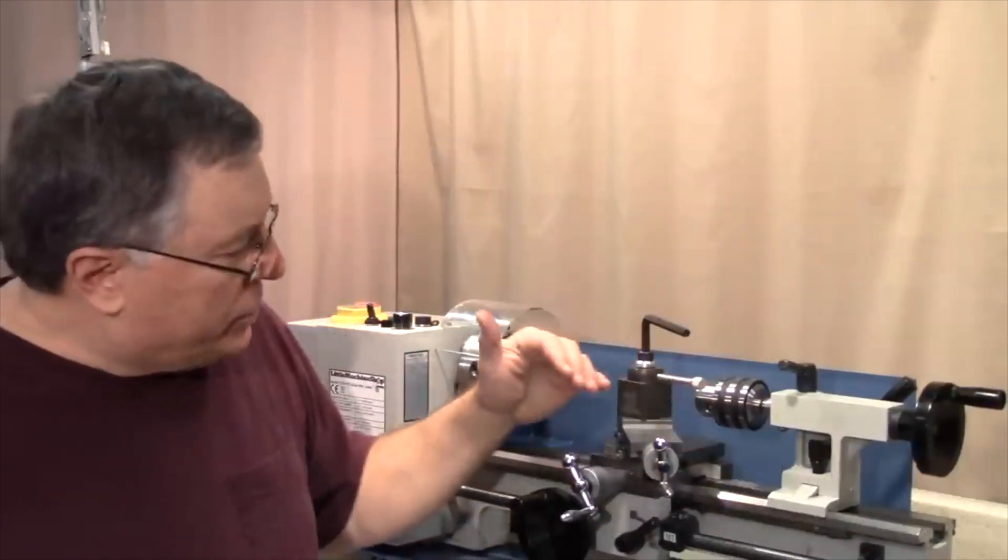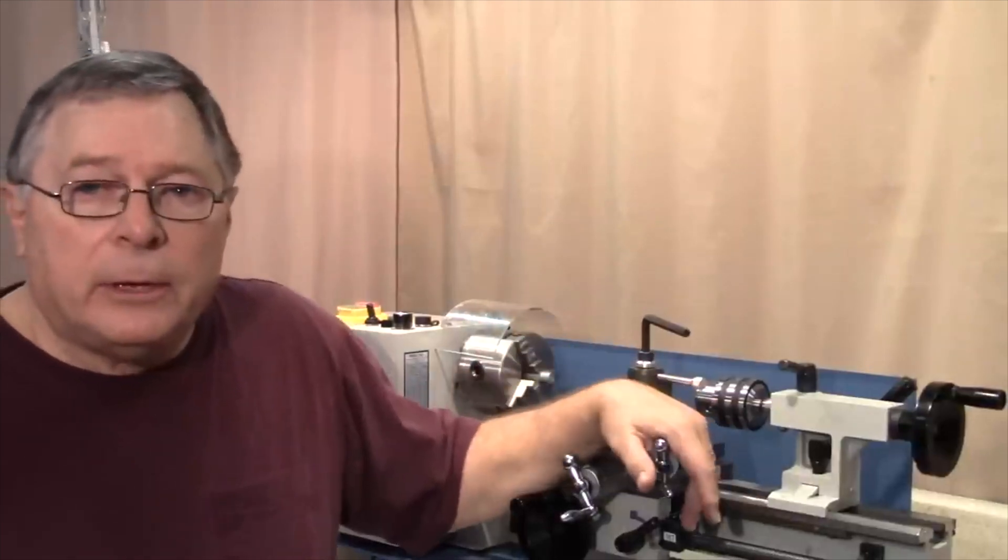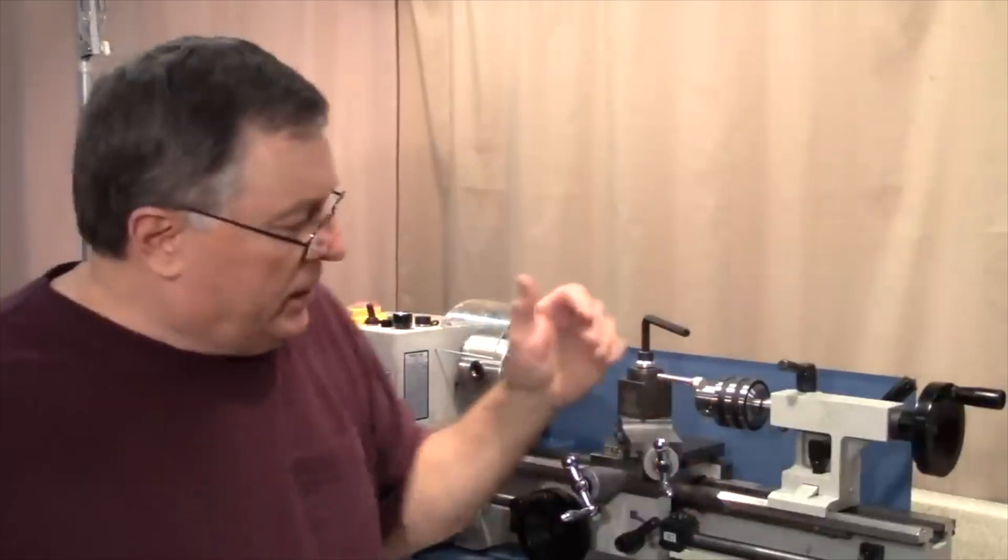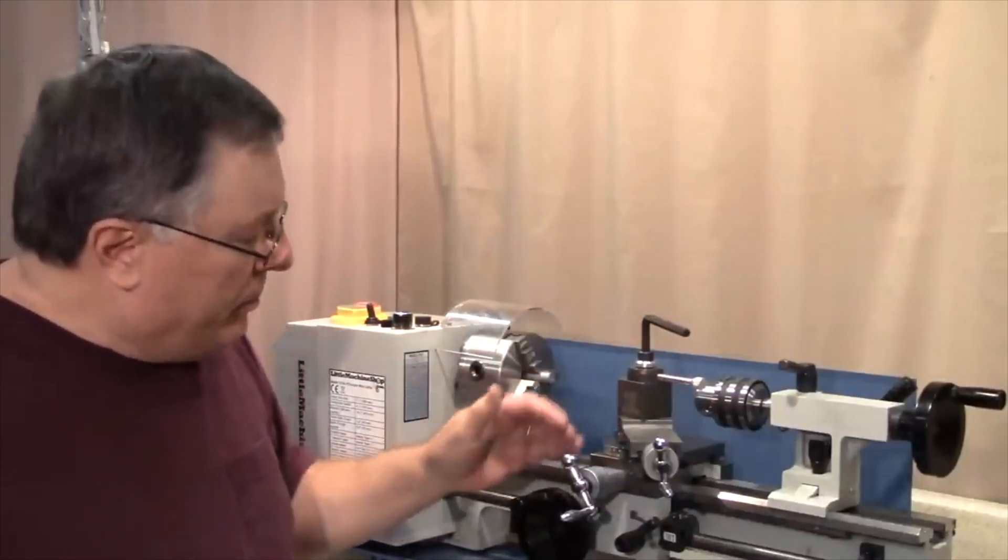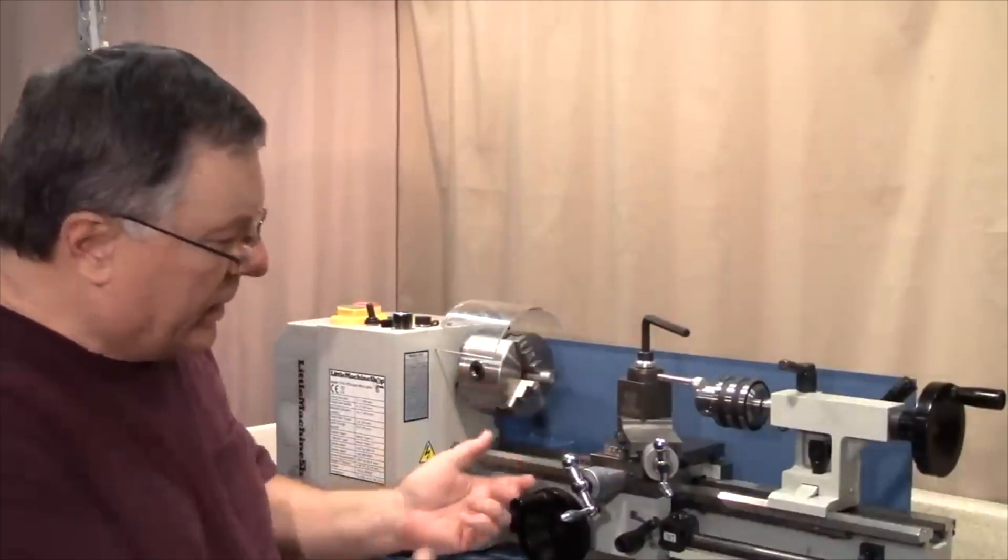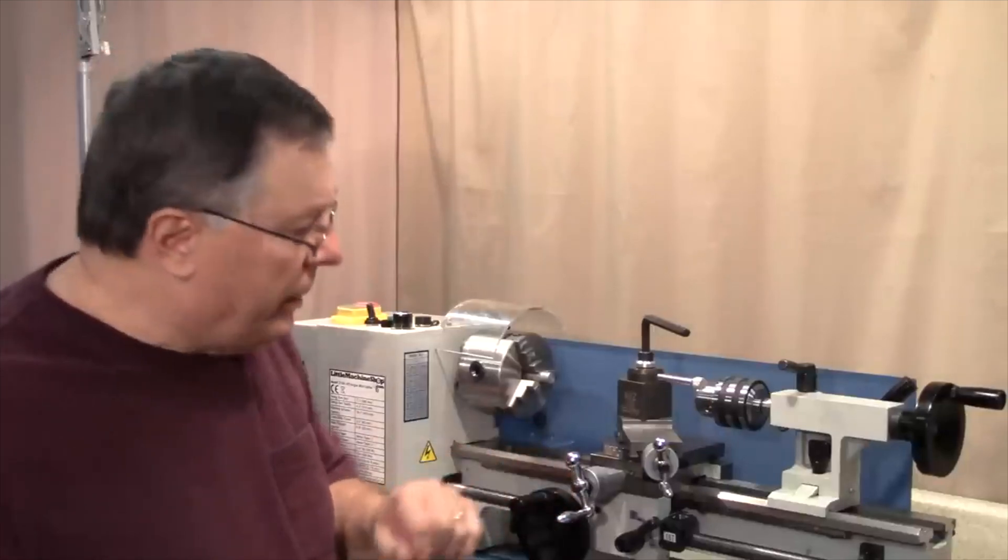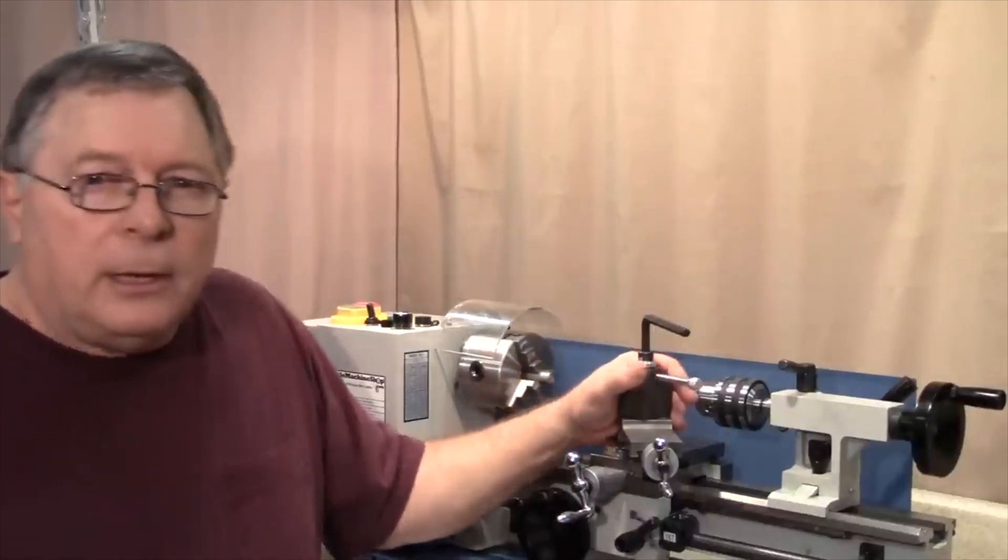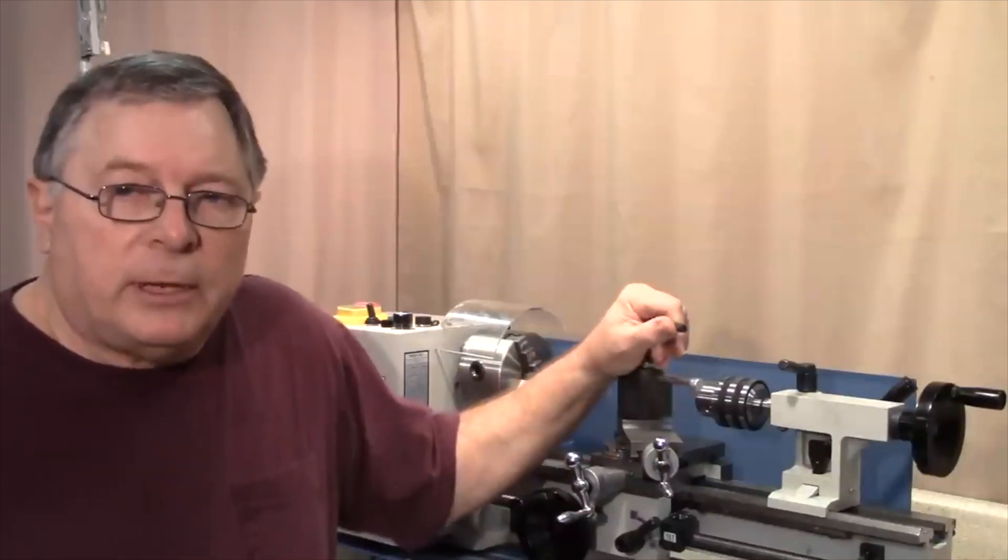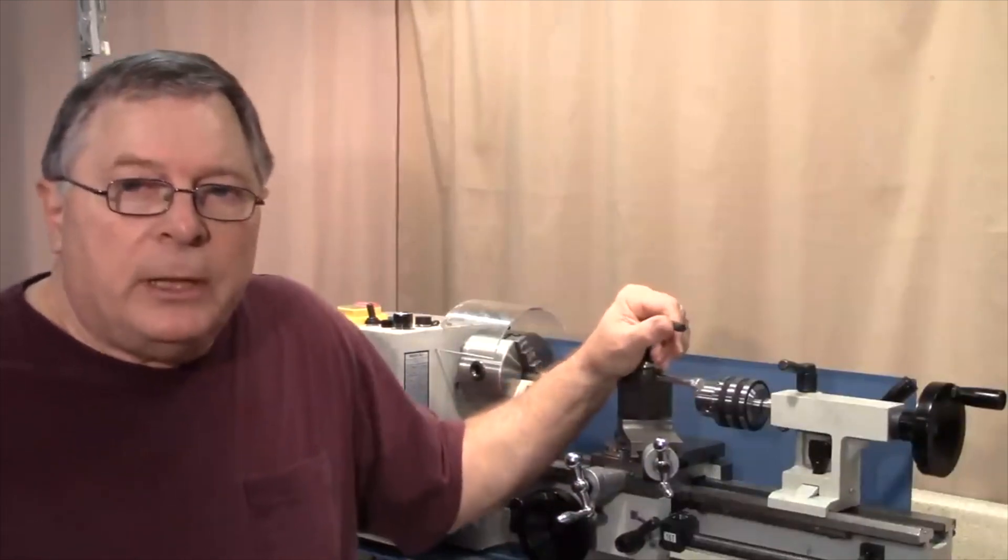Recently I did a video on how to adjust the cross slide and the compound, and those are pretty easy to do because you can get access to the screws right on the sides. But to adjust the carriage you actually have to get to some screws that are up underneath, and they're somewhat difficult to get to.